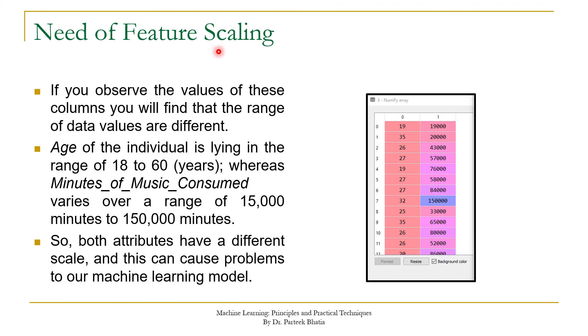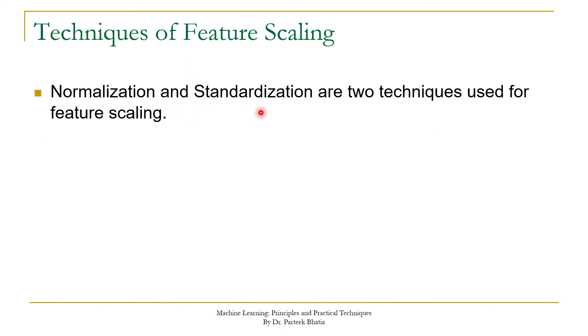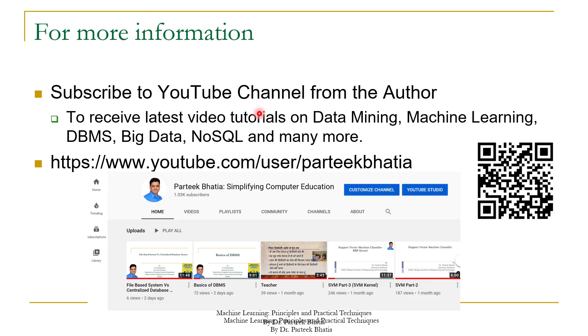In order to remove the biasing, we should feature scale all the columns in the same range. That's why in most cases feature scaling is a very important step of preprocessing. In this case we have to apply feature scaling, and we have two techniques: one is normalization and another is standardization. We will discuss the details of these techniques in the next video session.